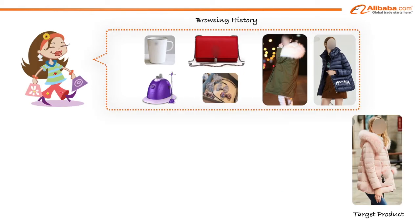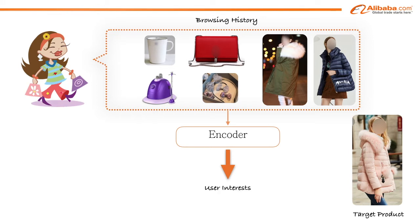Recently, inspired by the success of deep learning in computer vision and natural language processing, deep learning-based methods have been proposed for click-through rate prediction tasks. These models follow a similar embedding and MLP paradigm. Large-scale sparse inputs, including customers' browsing history, are first mapped into low-dimension embedding vectors and then transformed to fixed-length vectors. These models use this fixed-length vector to represent users' interests, which is then fed into fully-connected layers to predict the click-through rate.